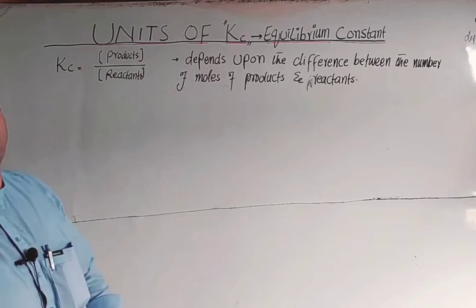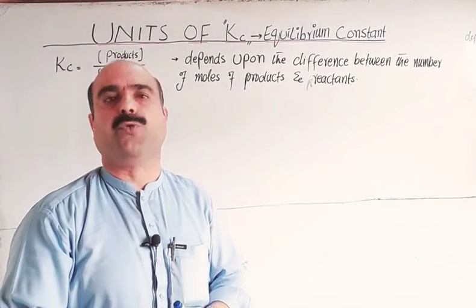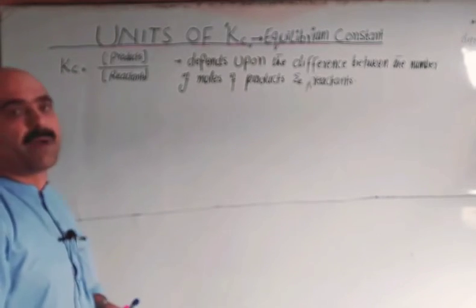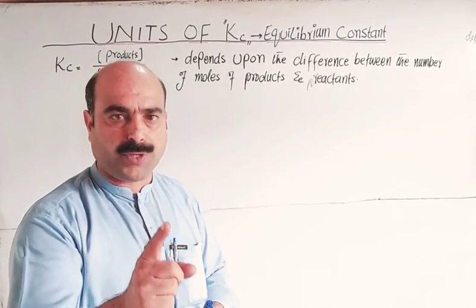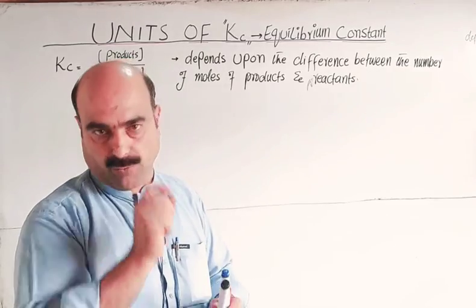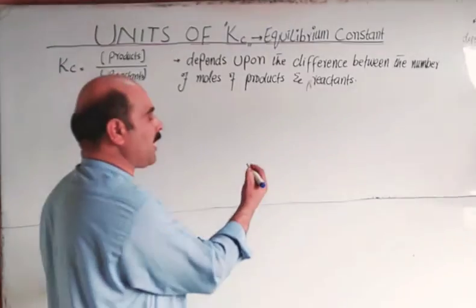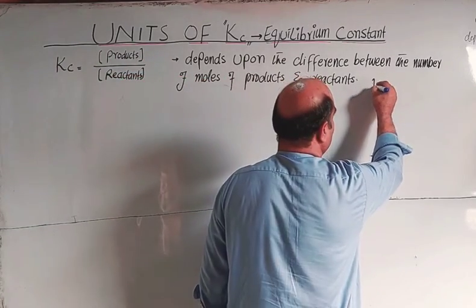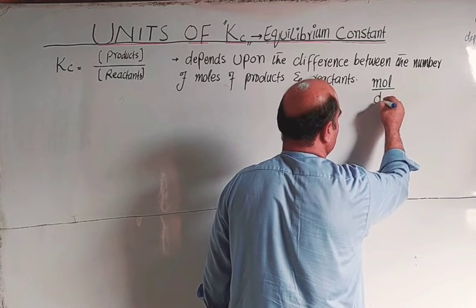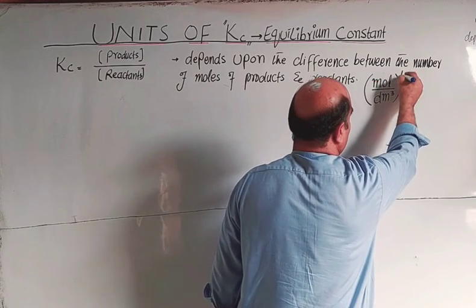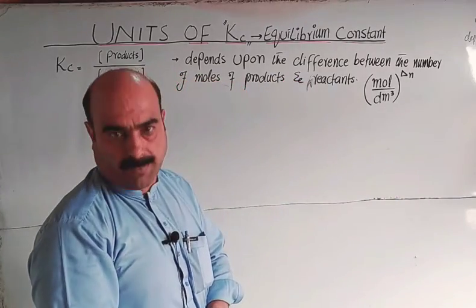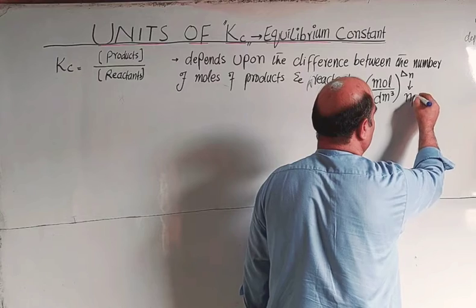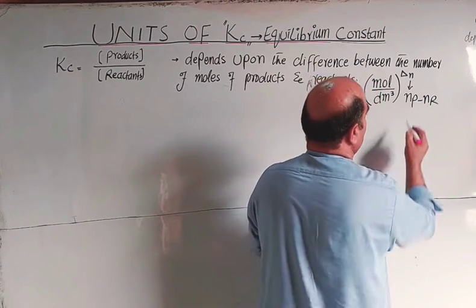If the number of moles of products and reactants are equal, then Kc will have no unit, because the units cancel out. The short trick is: the unit of Kc equals mole per decimetre cube raised to the power delta n, where delta n is the number of moles of products minus the number of moles of reactants.